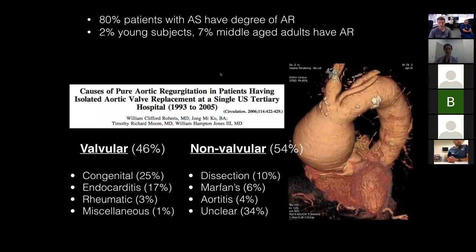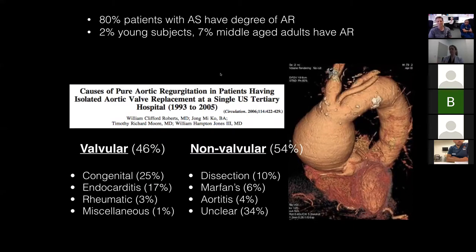Aortic regurgitation is pretty common — 80% of patients with some form of aortic stenosis have some degree of aortic regurgitation. If the AR is significant, it can make you overestimate the severity of the aortic stenosis, because if you've got more blood coming back, you're going to have more blood going forward. That's where the dimensionless severity index is so important; you can't rely on just the mean gradient or just the Vmax.